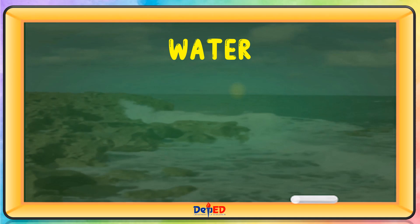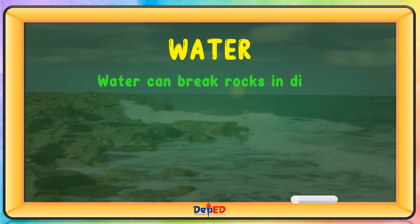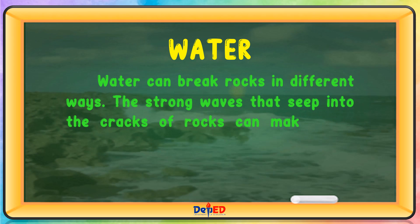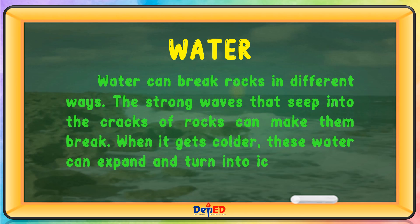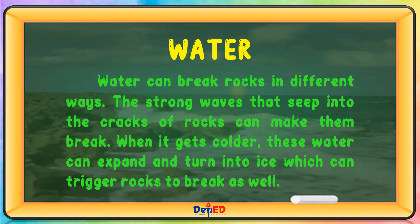Agents of weathering — Water. Water can break rocks in different ways. The strong waves that seep into the cracks of rocks can make them break. When it gets colder, this water can expand and turn into ice, which can trigger rocks to break as well.